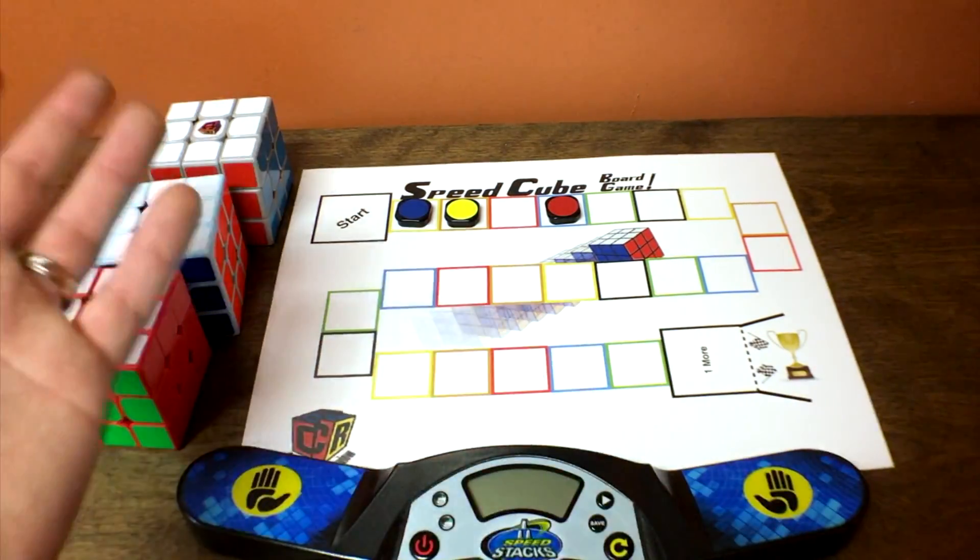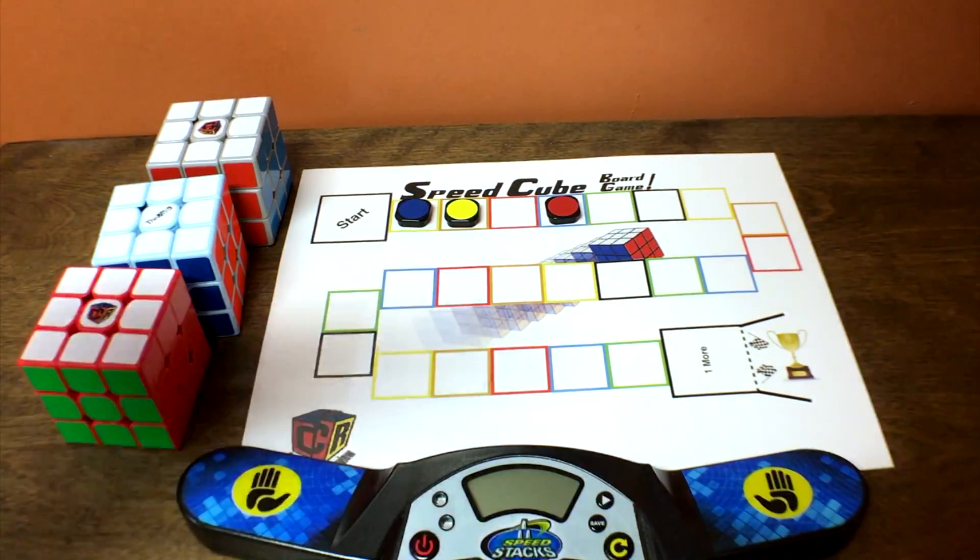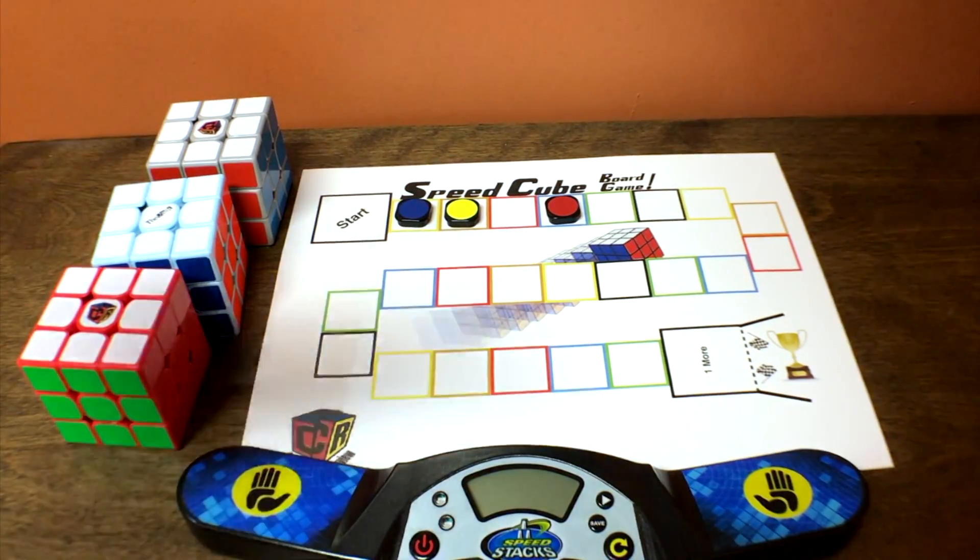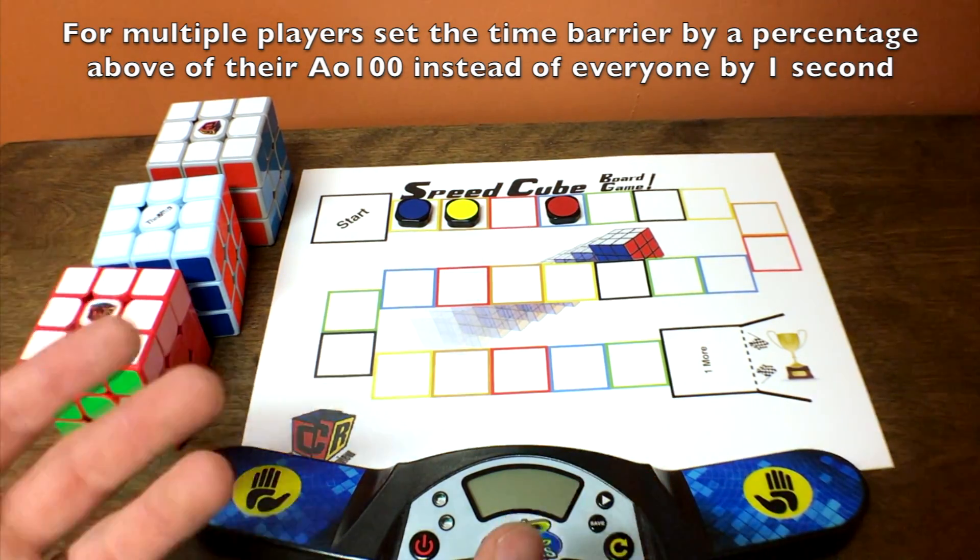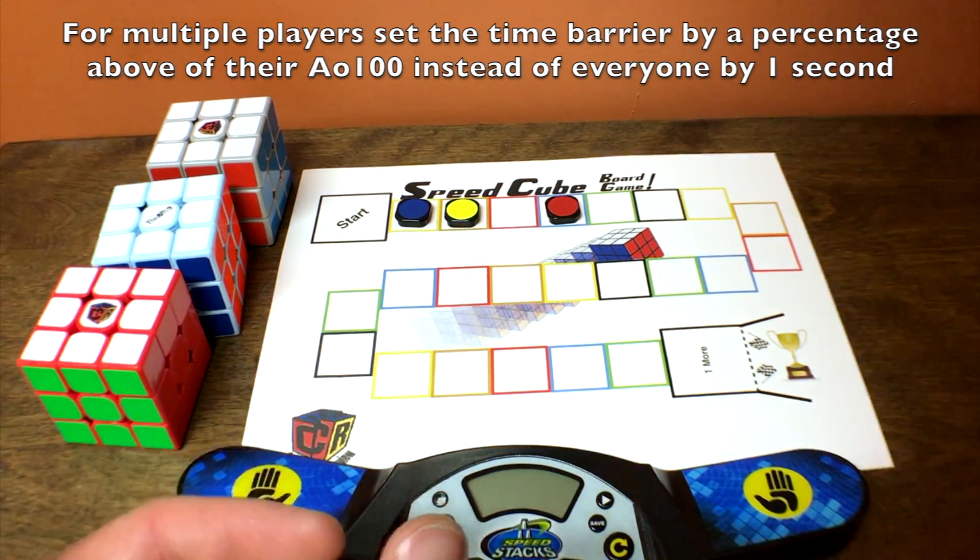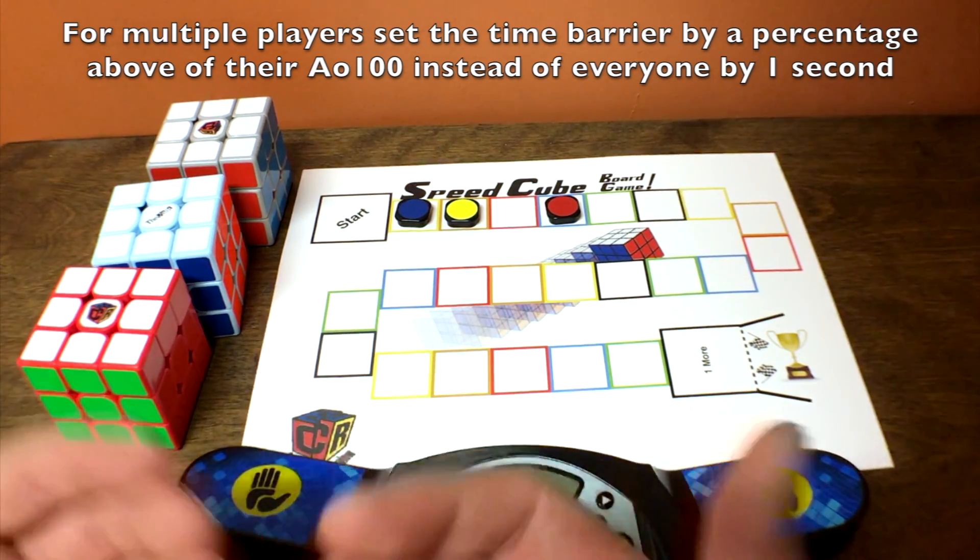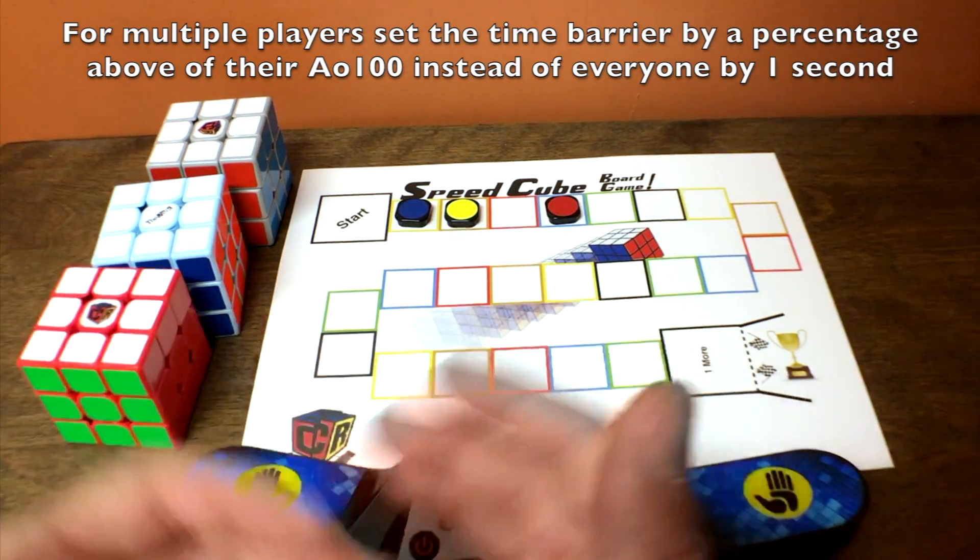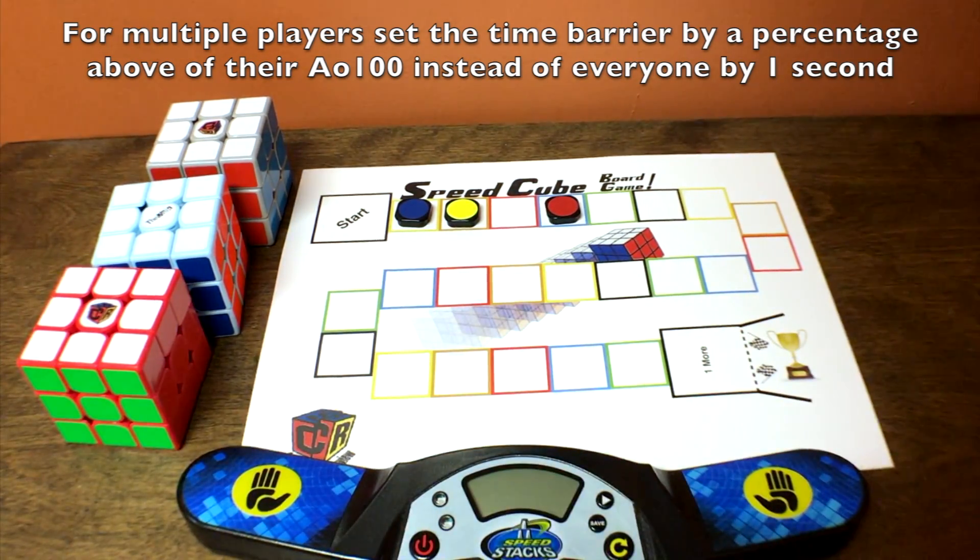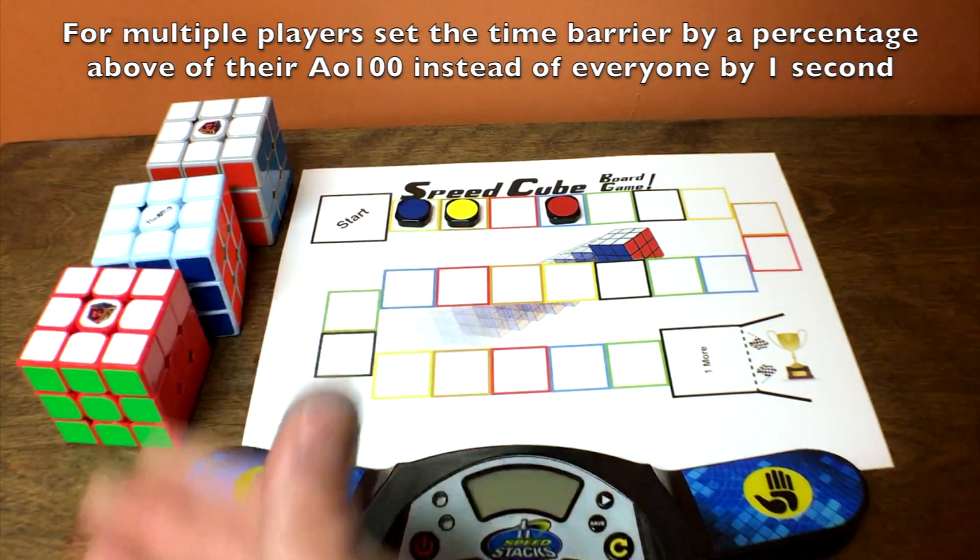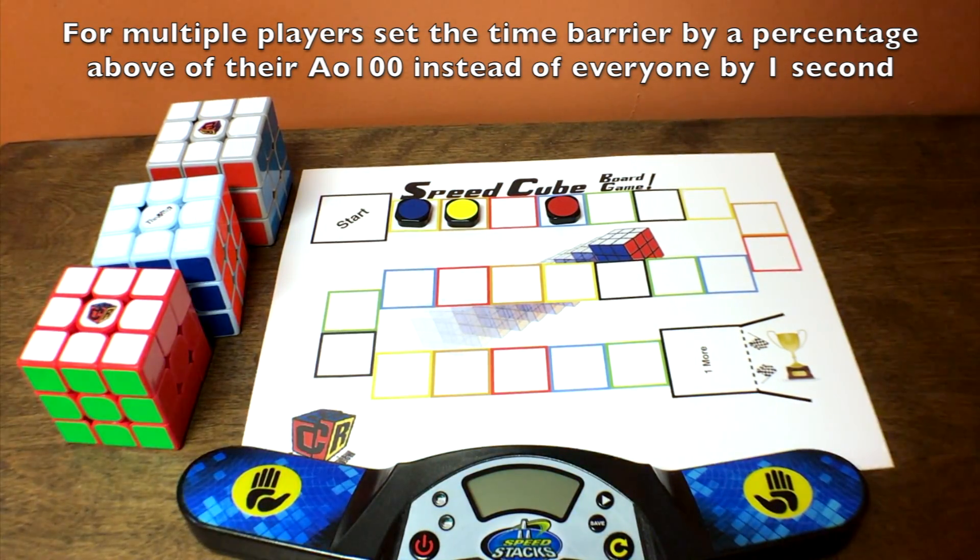One thing, if you're playing with multiple people, that instead of just adding a second to your average of a hundred, do a percentage. Do, let's say, 10% above that. Because if it's one second, well, someone who solves, let's say, average of seven seconds, a one second difference is much bigger gap than if someone solves 20 seconds average. So this kind of balances everything out, and if you are solving at 20 seconds, someone else at 10 seconds, someone at 15, everyone kind of gets to have an equal playing field, because you're just trying to beat whatever your average was instead of beat the other person.